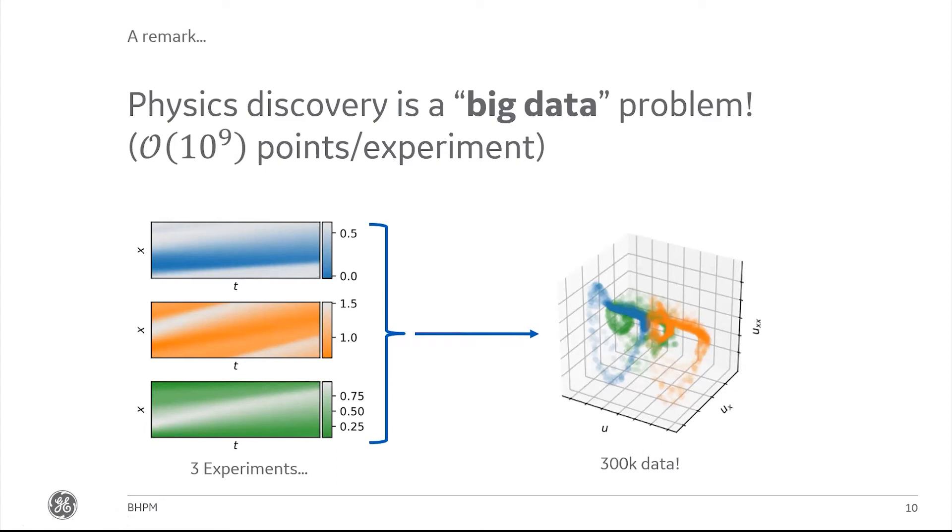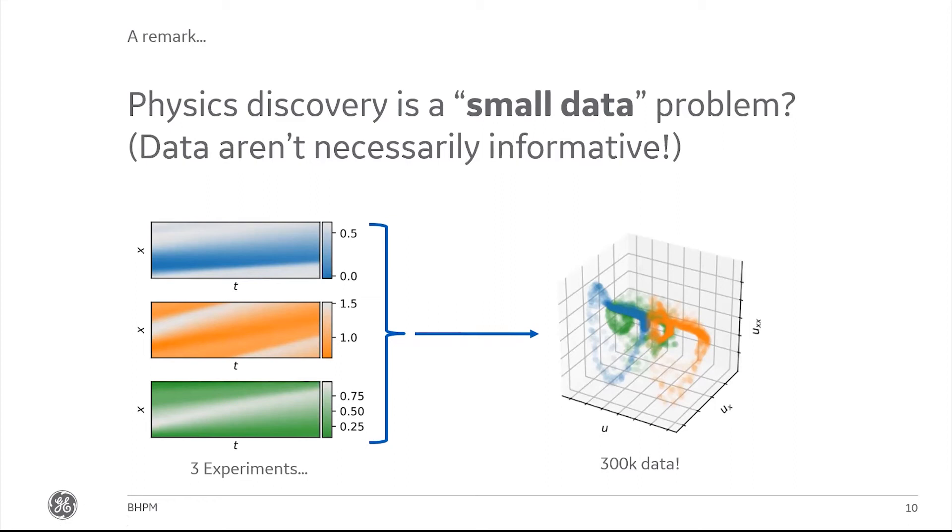But it's not all good news because one thing we might have to grapple with in practice is that not all of the data are all that informative. In this case, where I'm showing an example with Burger's equation, a lot of the data end up living in a very small part of the input space for that operator F. There's a lot of redundancy that might tamp down on how much we can actually learn from these data. This really motivates the need to be Bayesian about this problem, understanding what the data do and don't tell us by way of their coverage.